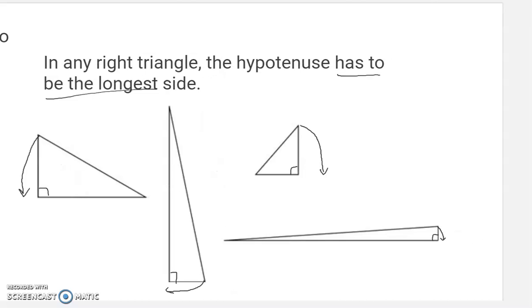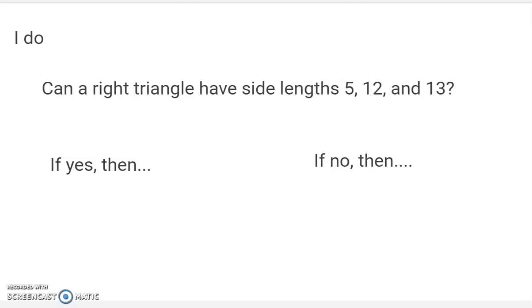That's going to be important today, because sometimes you're going to be asked questions like this: Can a right triangle have side lengths of 5, 12, and 13? And knowing that the longest side would have to be the hypotenuse is going to get us off to a good start. If this is possibly a right triangle, this one would have to be the hypotenuse because the hypotenuse has to be the longest side. So if these can be a right triangle, then the Pythagorean theorem should be true. Then the leg squared plus the other leg squared should equal the hypotenuse squared.